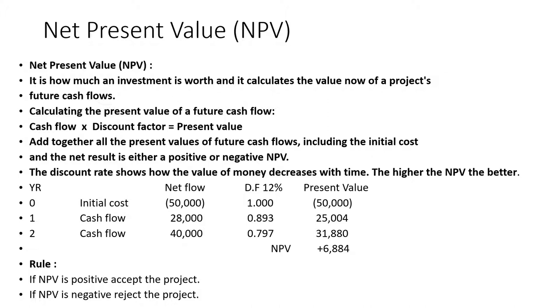Decision rule: if NPV is positive, accept the project. If NPV is negative, reject the project.